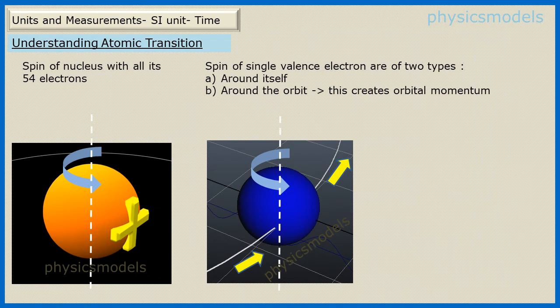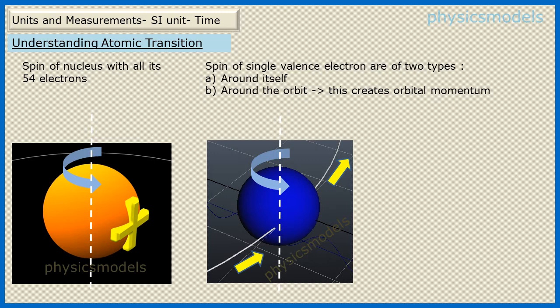To understand atomic transition it's important to understand the concept of spin. The electron spins around its own axis — that's its intrinsic spin — and also spins around the nucleus in its orbit, called the orbital spin. So there are two kinds of spin for the electron. The nucleus can also spin under certain circumstances. All this spin causes an interaction of the magnetic fields of the nucleus as well as that of the valence electron.